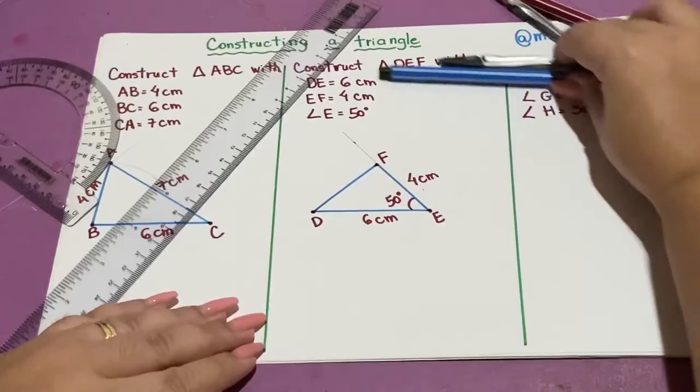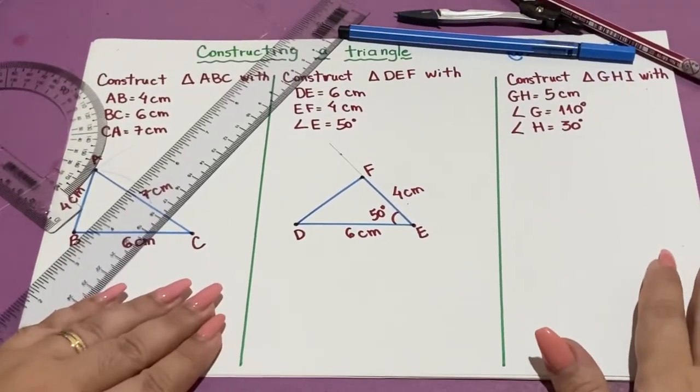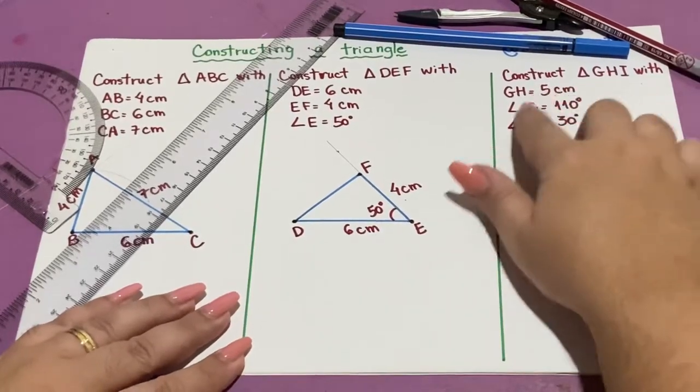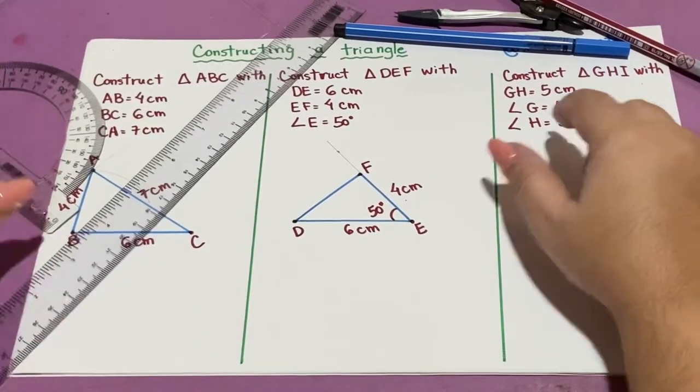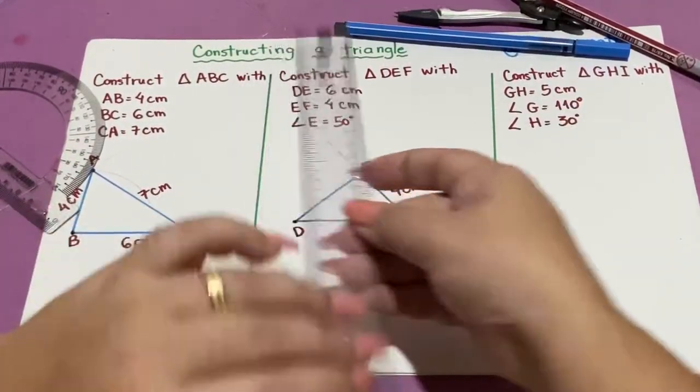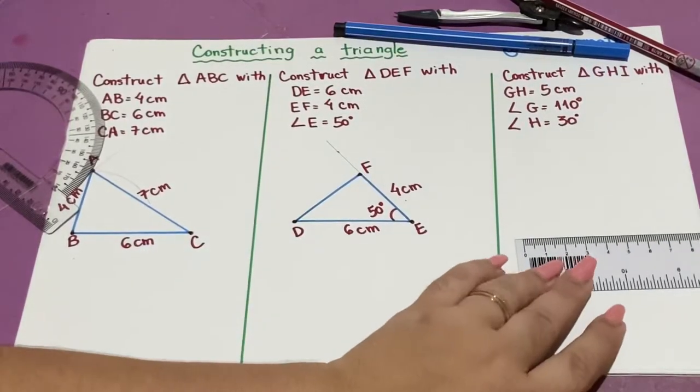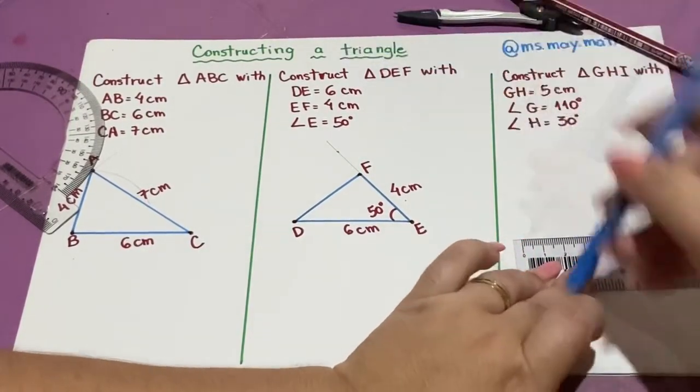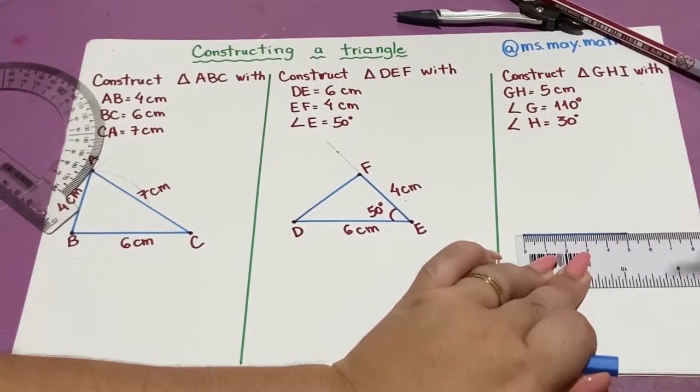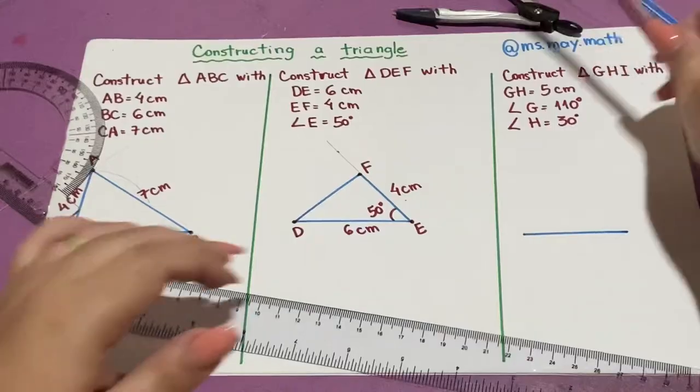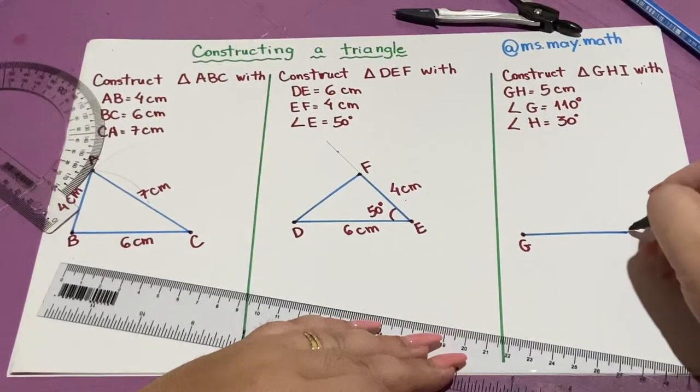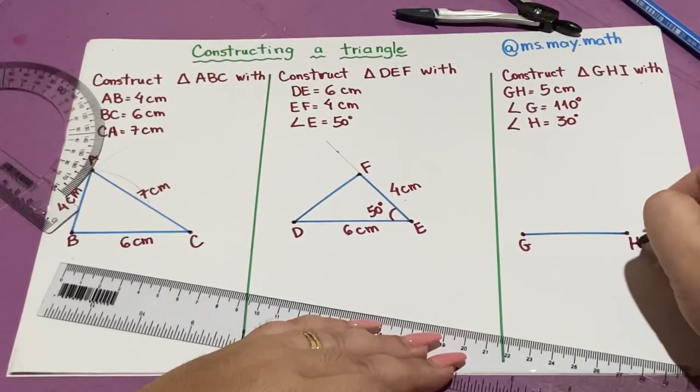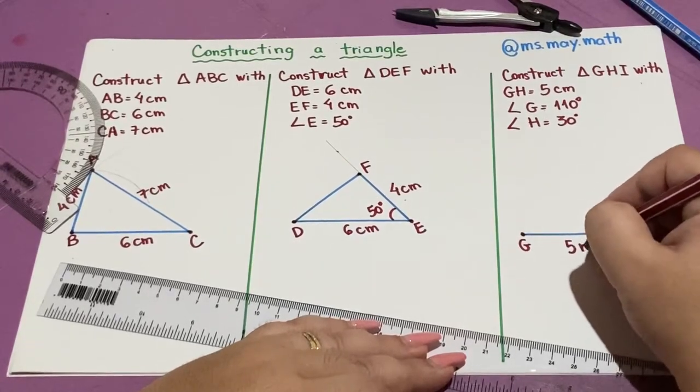The third situation is almost the same. I'm going to draw now with one side and two angles. Start drawing the side, 5 centimeters. Don't forget always to label. This is G, H, and this is 5 centimeters.